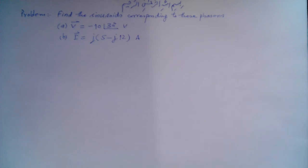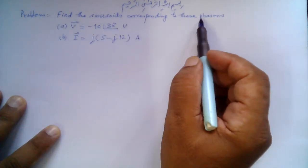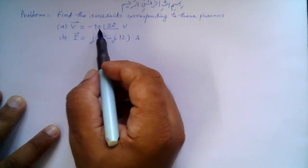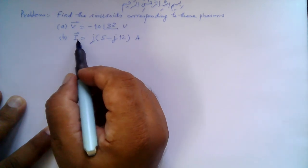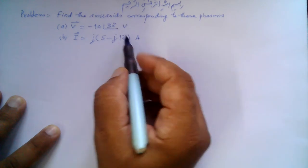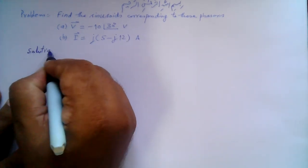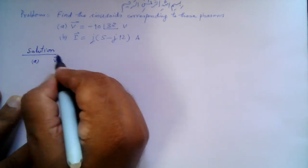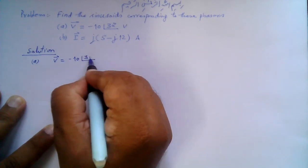Bismillahirrahmanirrahim. We have been given this problem: find the sinusoids corresponding to these phasors. Part A: V-bar is equal to minus 10 angle 30 degrees volts. Part B: I-bar is equal to j times the quantity 5 minus j12 amperes. Let's begin with Part A, where V-bar equals minus 10 angle 30 degrees volts.